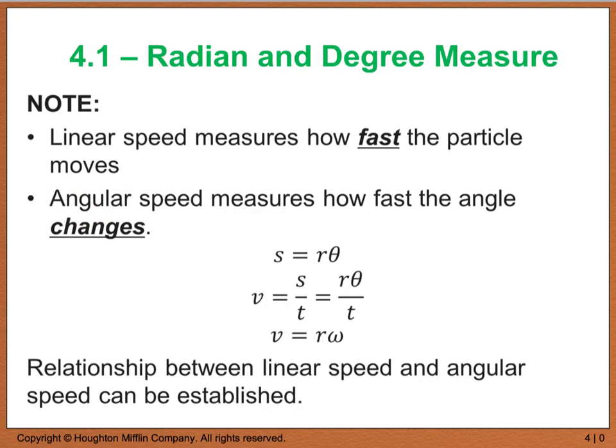Now, there is a relationship between the two of these. If you start out with the equation of arc length equals r times theta, and we know that linear speed v equals s divided by t, well, I can rewrite s as r theta, because that was given up above. So, linear speed is really equal to r times theta divided by t. And if you think back to the previous slide, we were told that omega, or angular speed, was equal to theta divided by t, which is really this piece right here. So, I can really rewrite linear speed v as r times omega. So, the relationship between linear speed and angular speed is this equation right here.